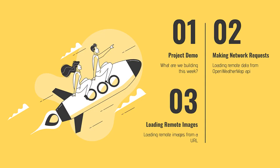We'll start with the project demo to give you an idea of what we'll be building this week. Then we're going to dive into how to make remote network requests on Android, specifically loading remote data from the Open Weather Map API. Then we'll take a look at how to load remote images as well, and a couple of different libraries we can use to load those remote images and place them into our UI efficiently.